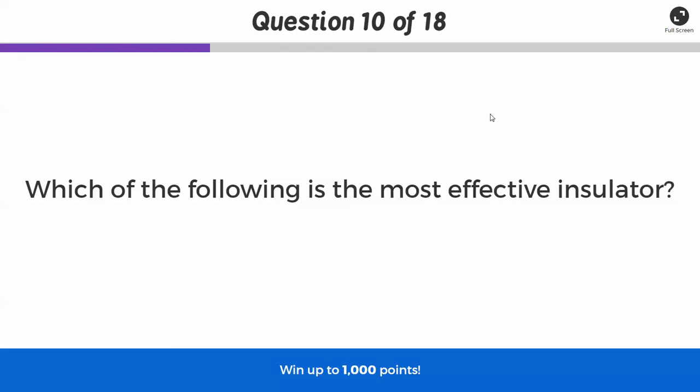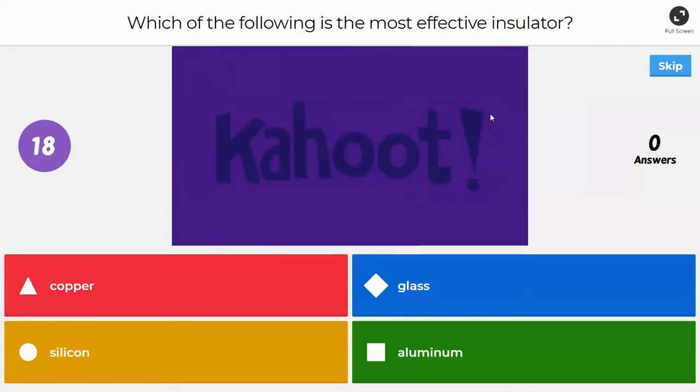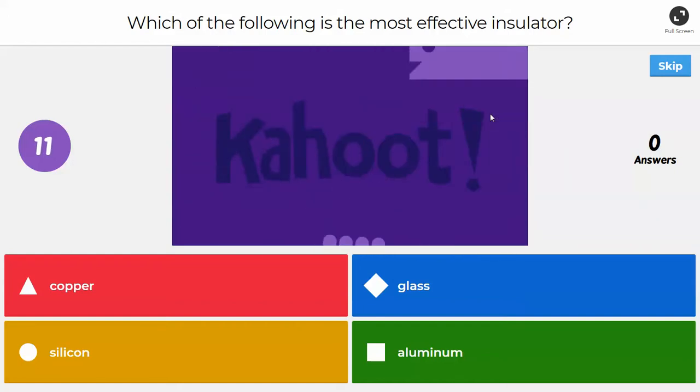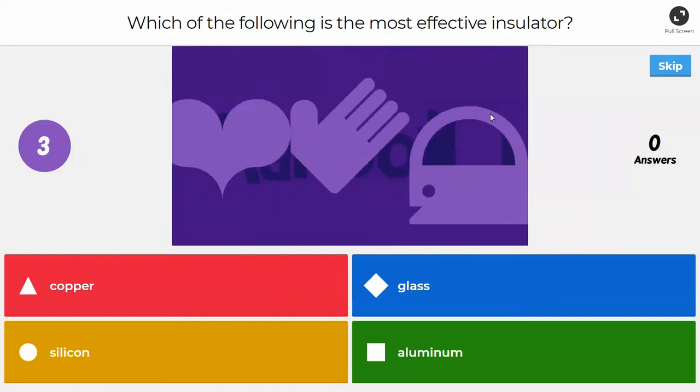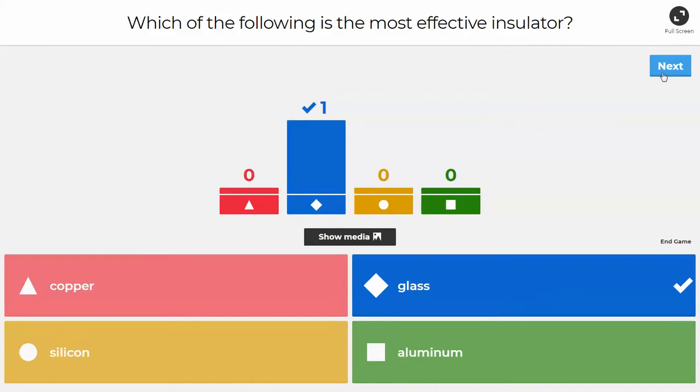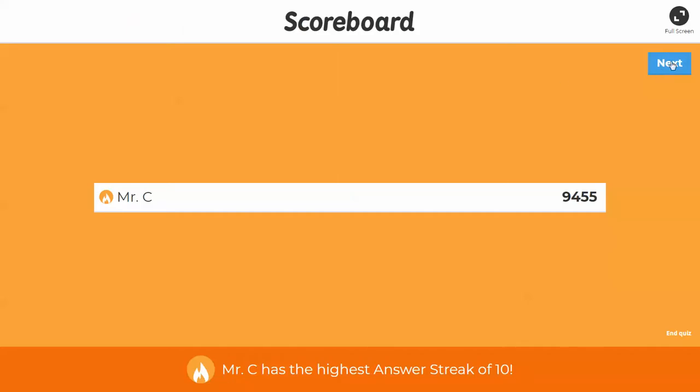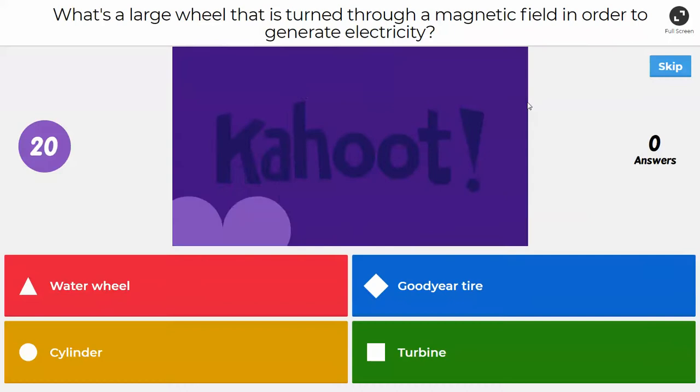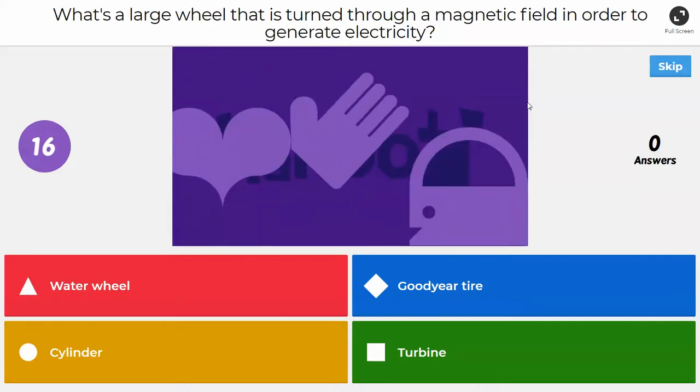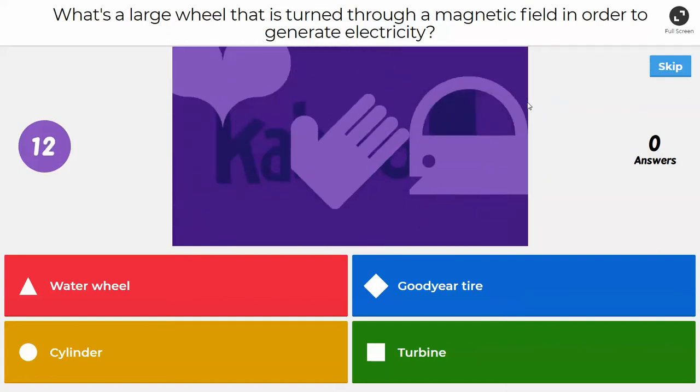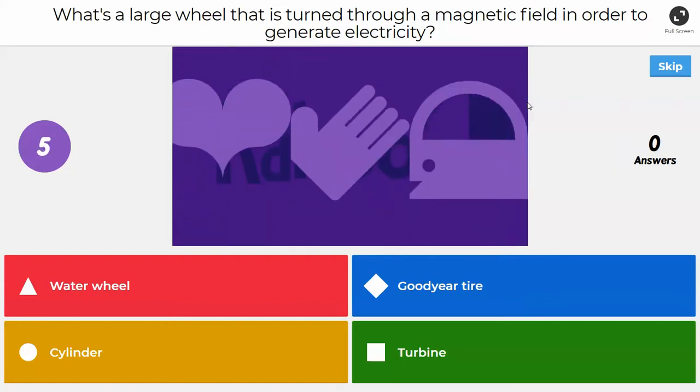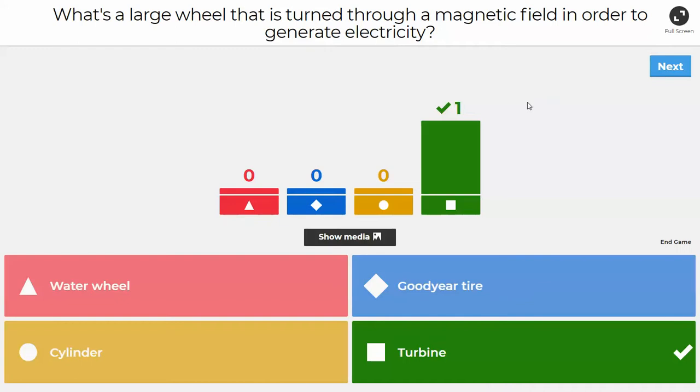All right, which of the following is the most effective insulator? So out of the four materials that are listed, which one is the most effective? Is it copper, glass, silicon, or aluminum? And glass would be the correct answer in this question. Glass is the most effective insulator. All right, we got, I think, eight questions to go. What's a large wheel that is turned through a magnetic field in order to generate electricity? Is it a water wheel, a Goodyear tire, a cylinder, or a turbine? So a turbine would be the correct answer in this case. Turbine would be the big magnetic field wheel that we have in all power plants.